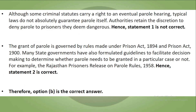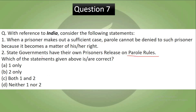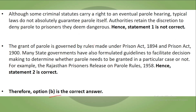The correct answer is B — only the second statement is correct. Although some criminal statutes carry a right to an eventual parole hearing, laws do not absolutely guarantee parole itself; authorities retain the discretion to deny parole to prisoners deemed dangerous. So statement 1 is incorrect. The grant of parole is governed by the Prisoners Act of 1894. Many state governments have formulated guidelines, for example the Rajasthan Prisoners Release on Parole Rules 1958. So statement 2 is correct.